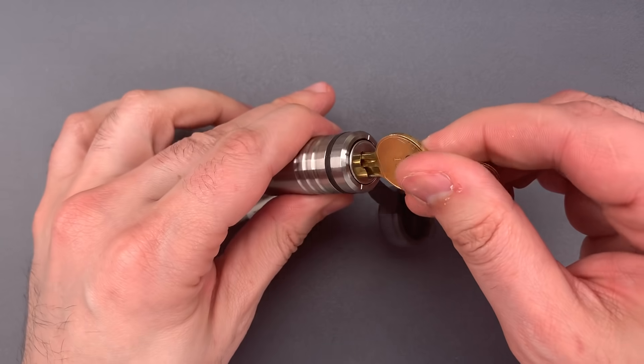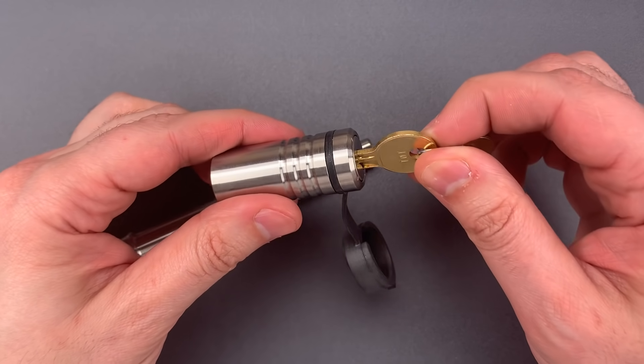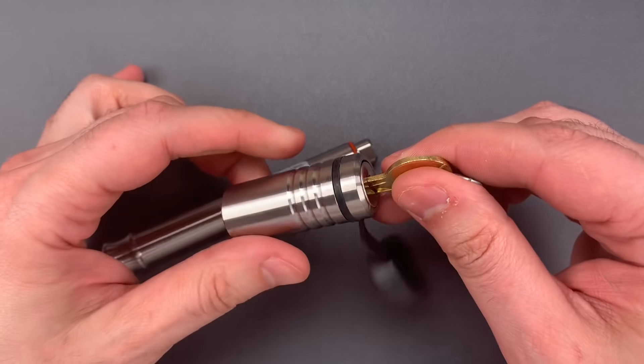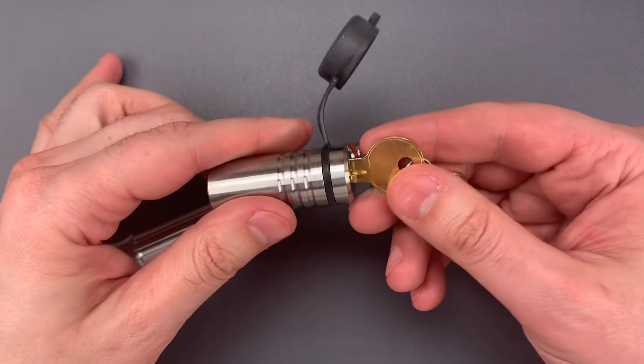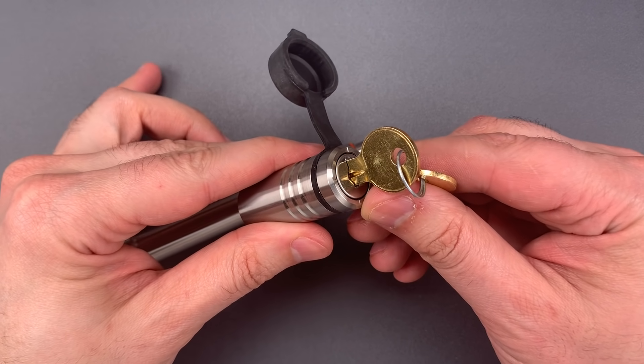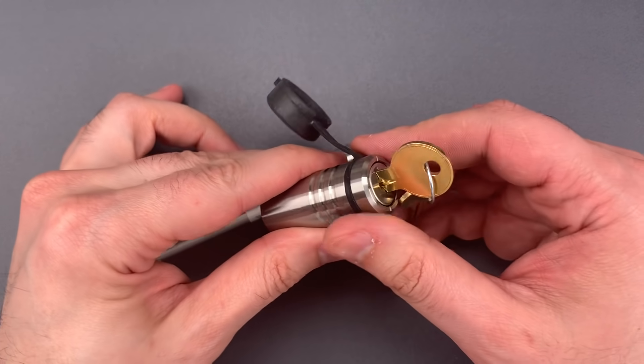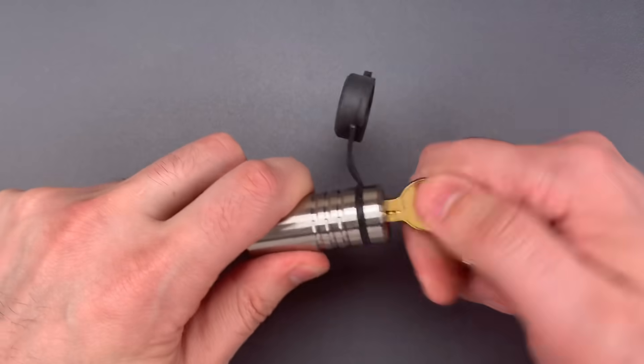Now, because this core relocks every quarter turn, to pick this open, I'm going to have to re-pick it several times. If the core were even a little bit challenging, it would take a really long time. Unfortunately, the manufacturer used a basic wafer lock, and it can be jiggled open rapidly. So, let's lock this back up and see what it takes to pick it open.